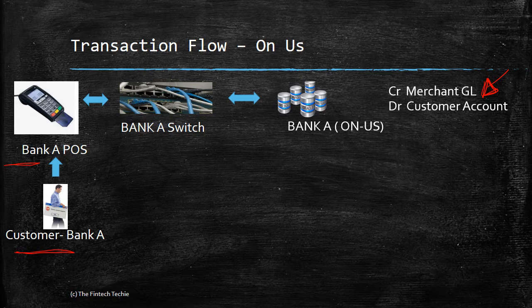The customer may or may not be debited a fee here. An additional entry could involve debiting the customer and crediting the income GL to recover charges. Sometimes the merchant may or may not pass this charge on to the customer.